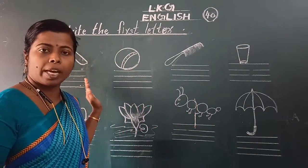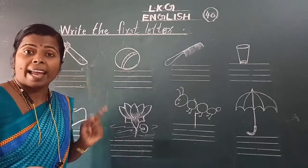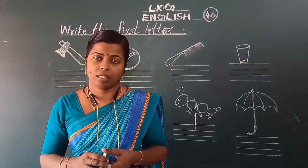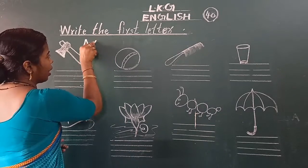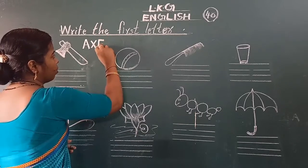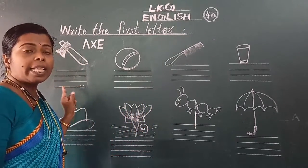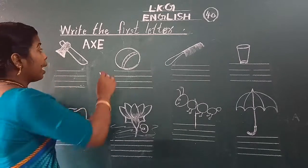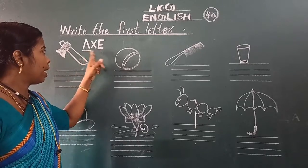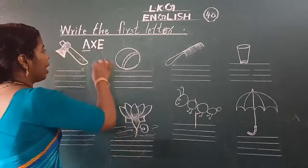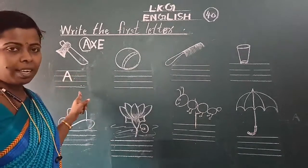Sabko pictures ka naam samaj me hai? Yes, let's start. See, what is this? This is an axe. Do you know the spelling of axe? A-X-E. Okay? This is my first letter — A. Isliya, first letter A. Samaj me hai?